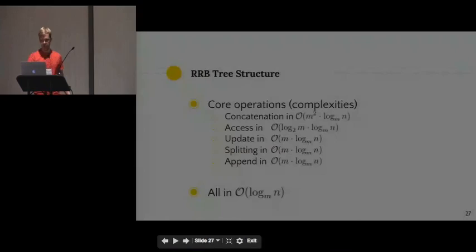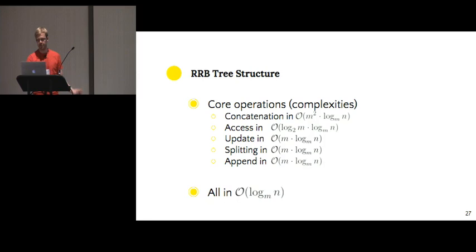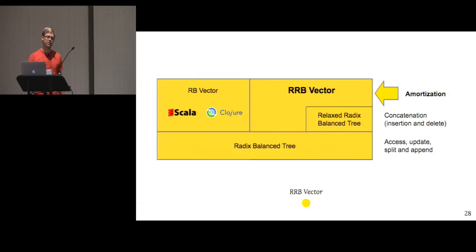So with this, we achieved logarithmic bounds all around, but this is not all because we wanted to keep all the performances that we have due to optimizations from the old vector. So here we're focusing on amortization based on index locality of the operation.